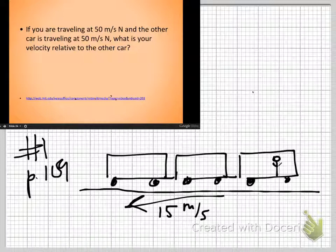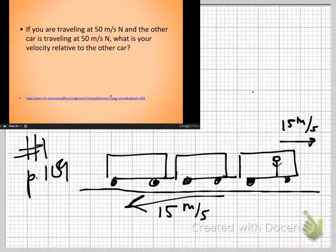in the last car of the train. Well, they don't really have those anymore. Who throws a baseball at 15 meters per second opposite the motion of the train. What's the velocity of the baseball relative to the Earth?